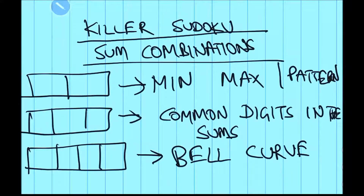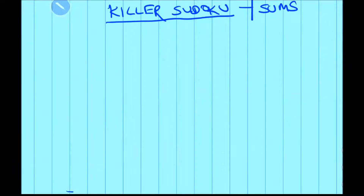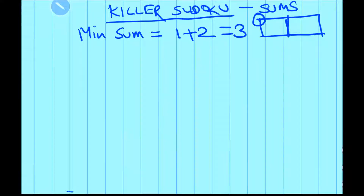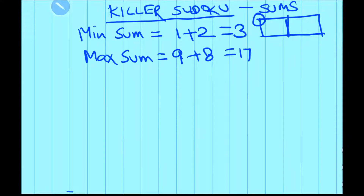Please follow this video till the end. Let's consider a cage of 2 cells. In the introduction video, I told you about killer sudoku and its minimum and maximum sum. For a 2-cell cage, the minimum sum possible is 3 and the maximum sum possible is 17. Now we will see some more sums in between.